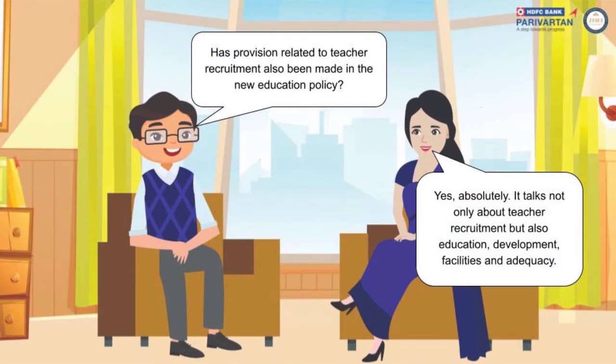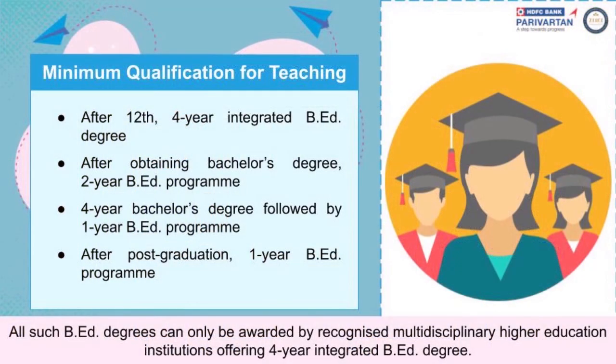Has any provision been made related to teacher recruitment in the new education policy? Yes, absolutely. It talks not only about teacher recruitment but also education, development, facilities, and adequacy. The minimum qualification for teaching requires after 12th a 4-year integrated B.Ed. degree, or after obtaining a bachelor's degree a 2-year B.Ed. program, or a 4-year bachelor's degree followed by 1 year of B.Ed. After post-graduation, a 1-year B.Ed. program is compulsory. All such B.Ed. degrees can only be awarded by recognized multi-disciplinary higher education institutions.